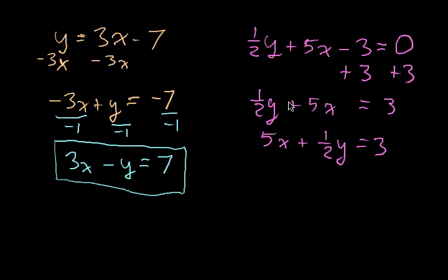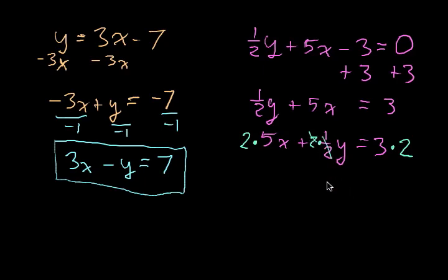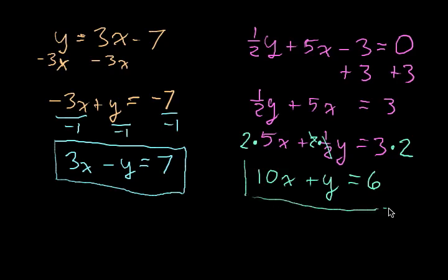We can switch those terms because of the commutative property of addition. Now, we have a fraction here, and we're not supposed to have fractional coefficients in standard form. To get rid of the fraction one half, we multiply everything by the denominator — so we multiply all three terms by 2. The 2's cancel on the y term, leaving us with 10x plus y equals 6, and this is standard form.